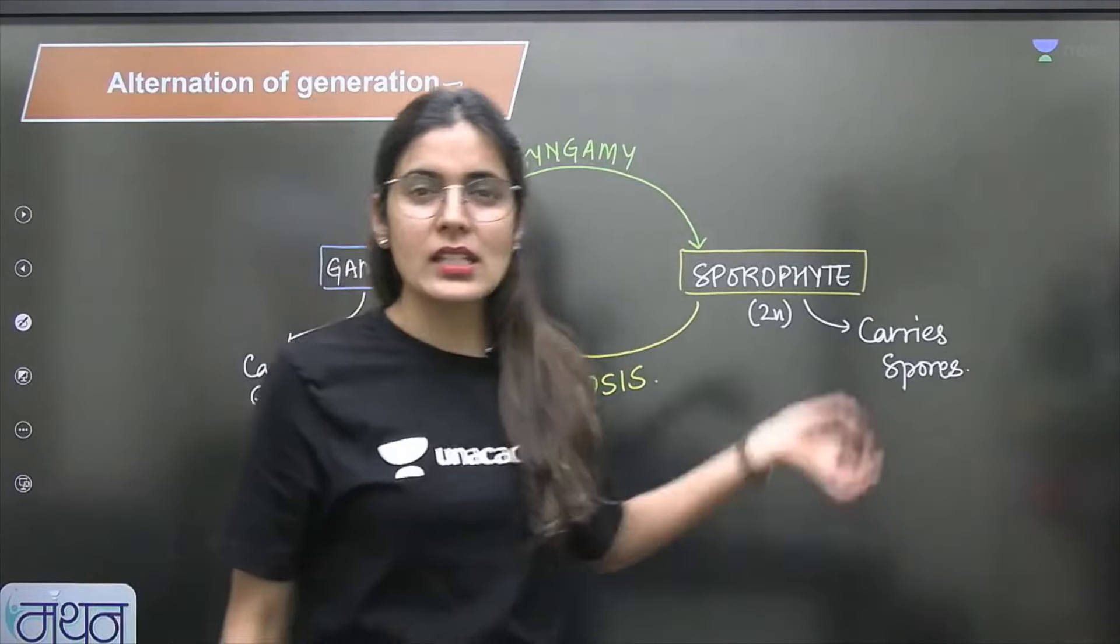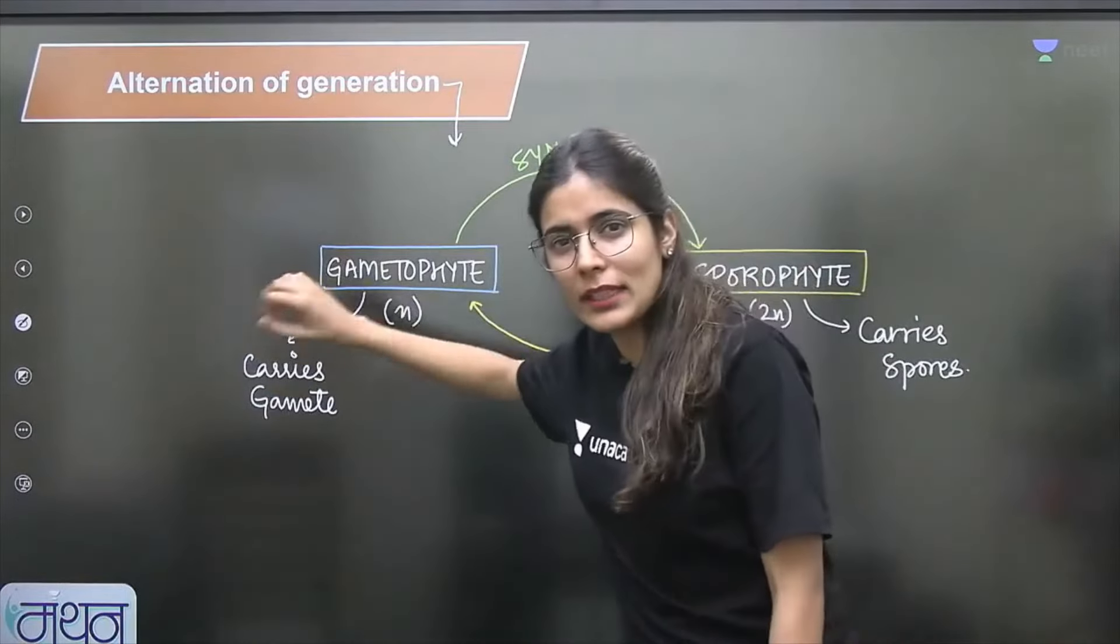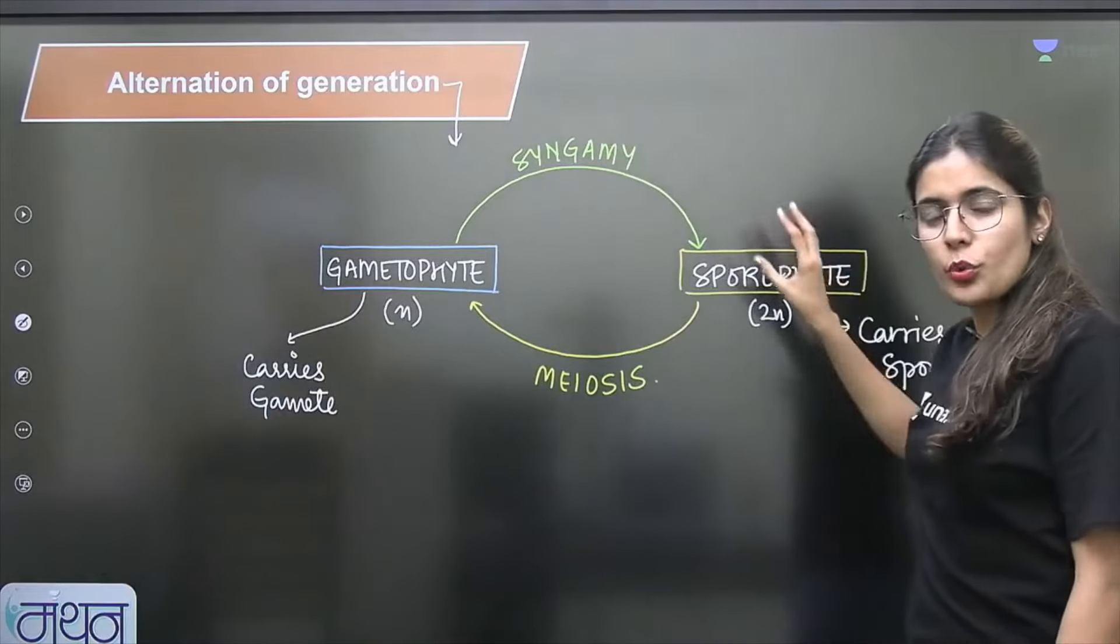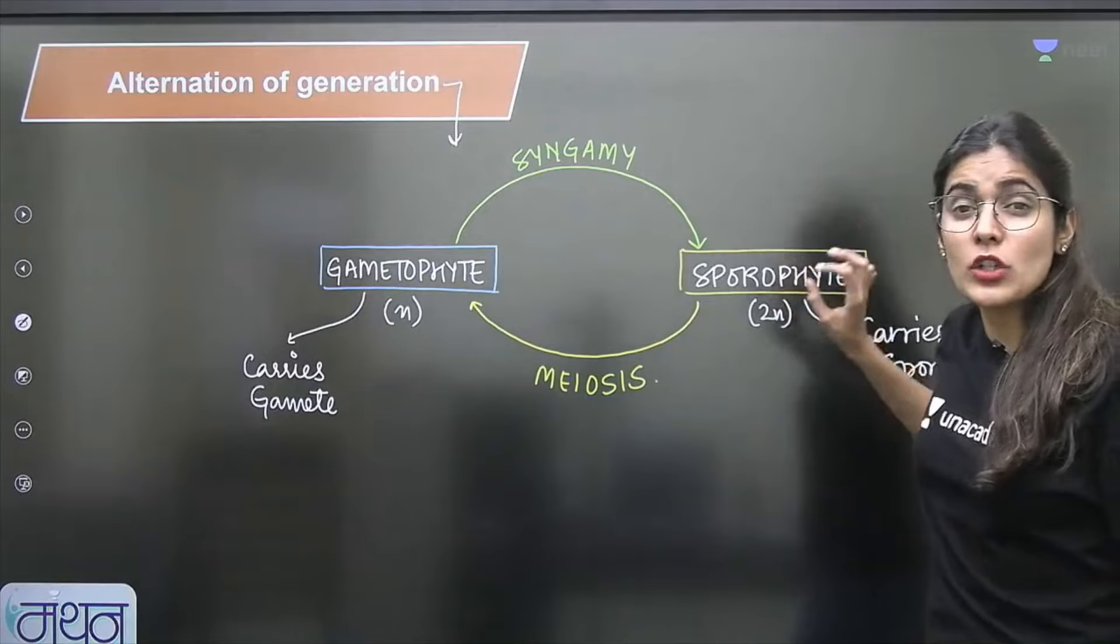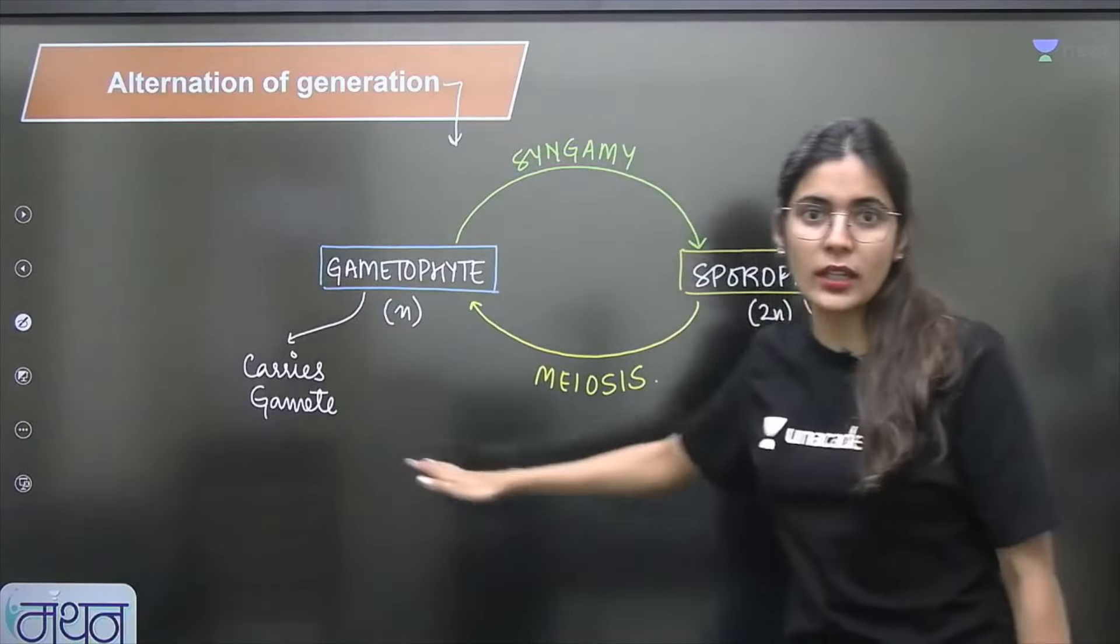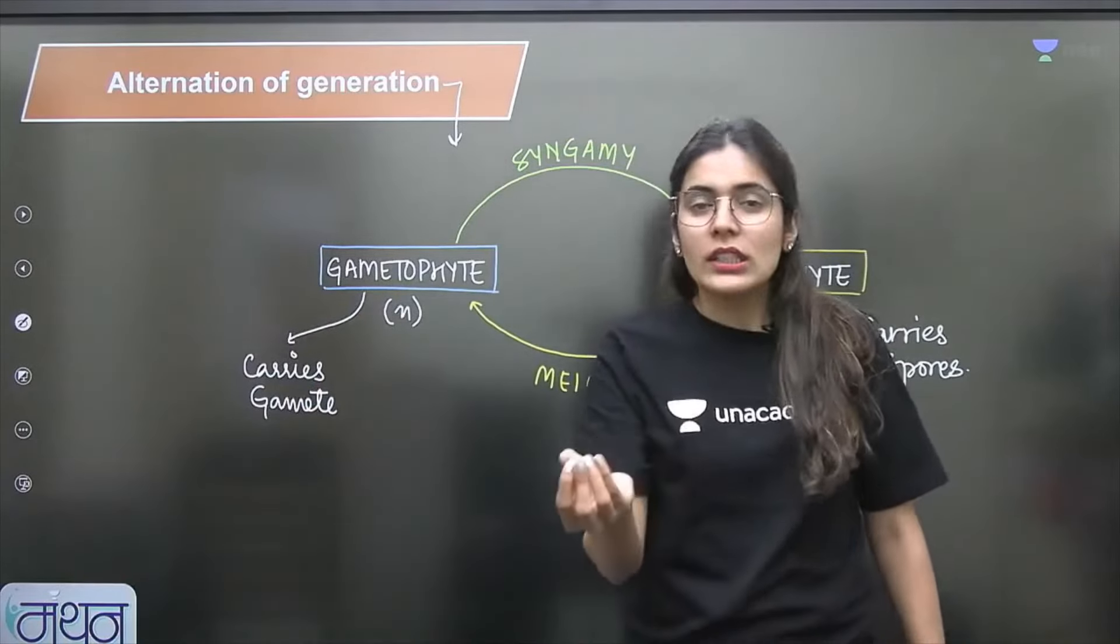This is the classic plant life cycle. There's a haploid structure which produces gametes. When those gametes are fertilized, it becomes sporophyte, a diploid structure. This diploid structure undergoes meiosis to produce spores. When spores germinate, they form gametophyte. This is the plant life cycle.